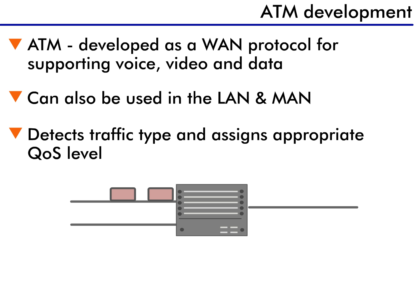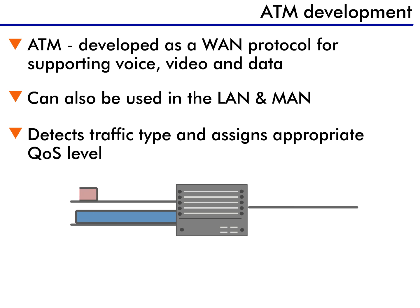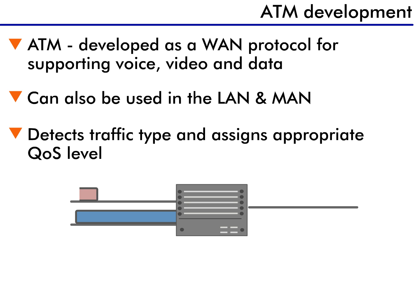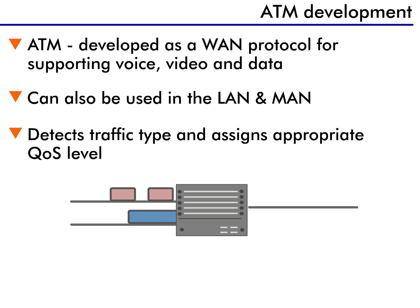Because it can support different types of traffic, ATM is a very flexible protocol that can detect the different classes of traffic and assign them the appropriate quality of service. Voice gets one level, video gets another, and data a third, yet all coexist on a single wire.